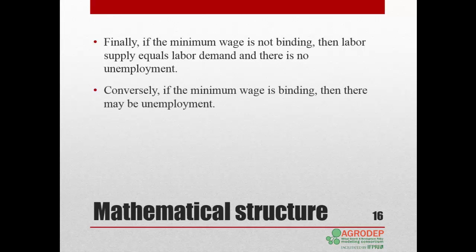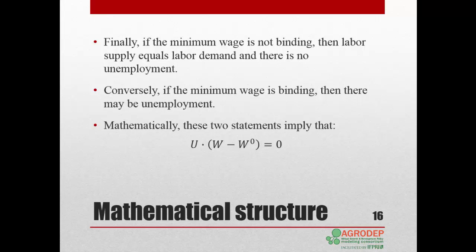Conversely, if the minimum wage is binding, there may be unemployment. Mathematically, we express these two possibilities in a single equation: if one term of a product is positive, the other must equal zero. So if the wage rate is greater than the minimum wage (the difference is positive), then unemployment must equal zero and the labor market clears. On the other hand, if the minimum wage is binding, the wage rate equals the minimum wage, the second term equals zero, and unemployment can be positive.